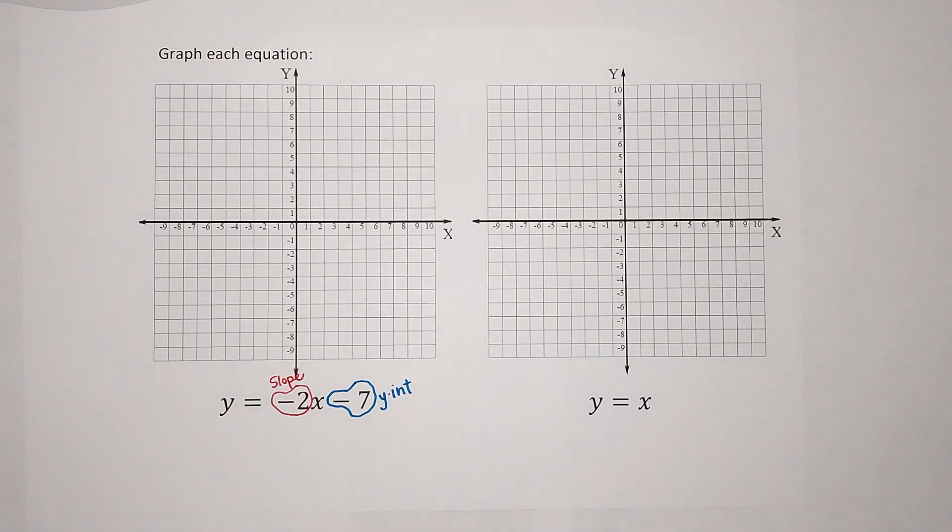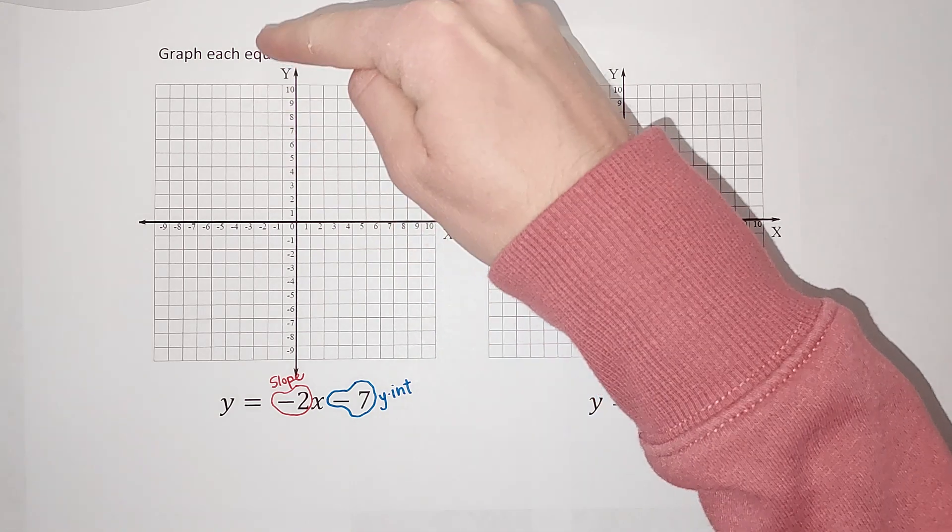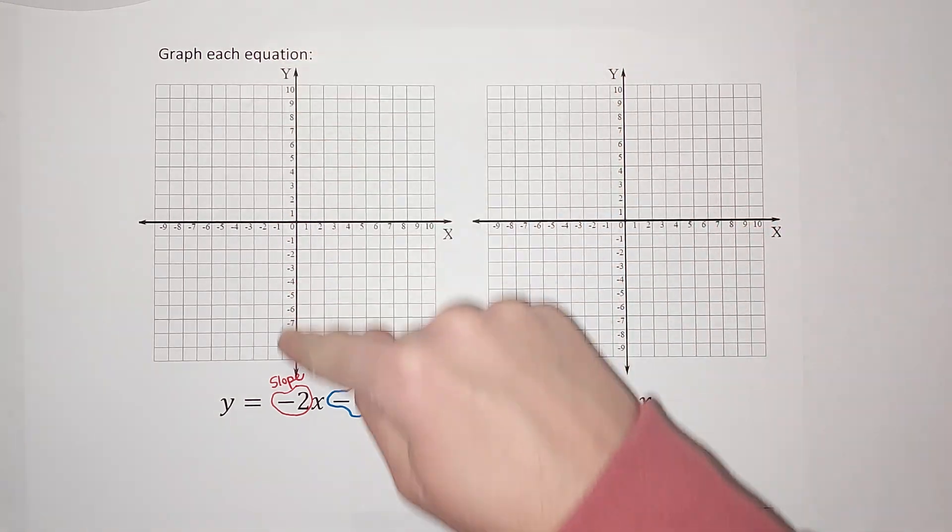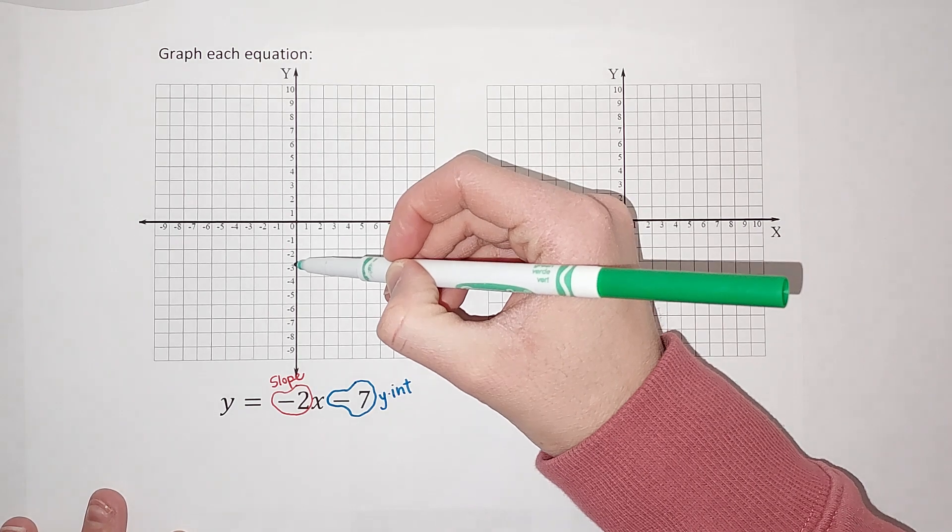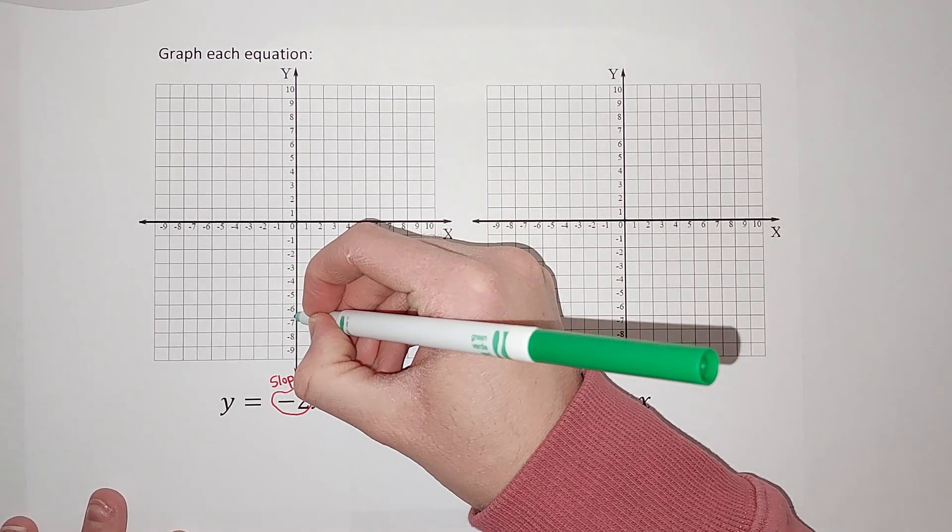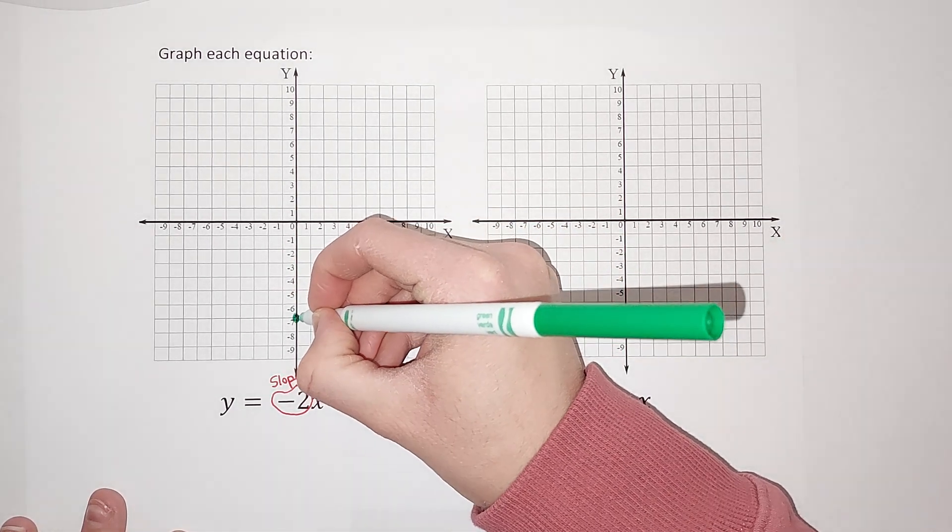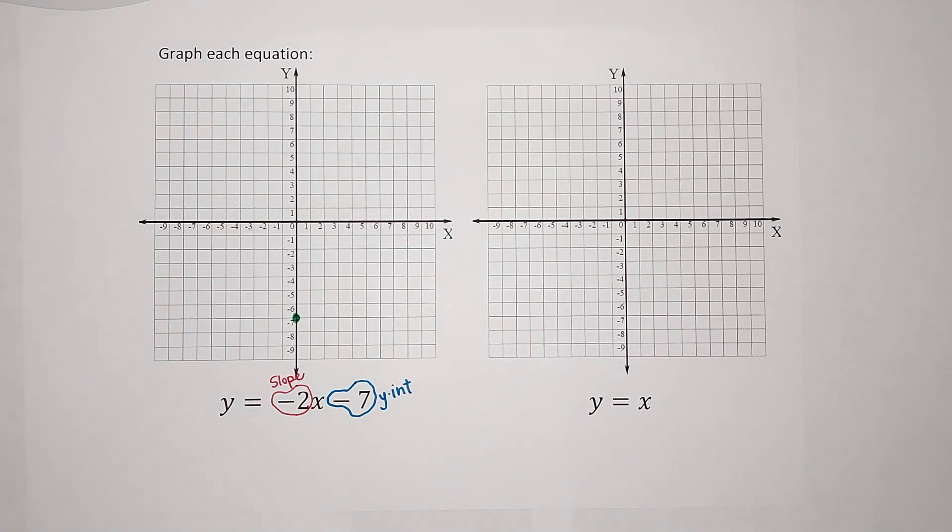So what this tells me is my line for this equation crosses my y-axis, that's this one right, crosses my y-axis at negative 7. So it's going to look something like this. Start at 0, go down 7: 1, 2, 3, 4, 5, 6, 7, right there. I know my line crosses that point.